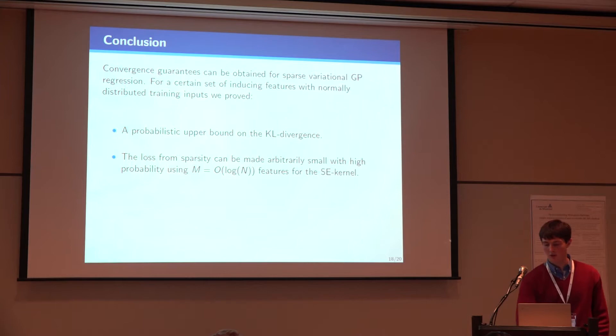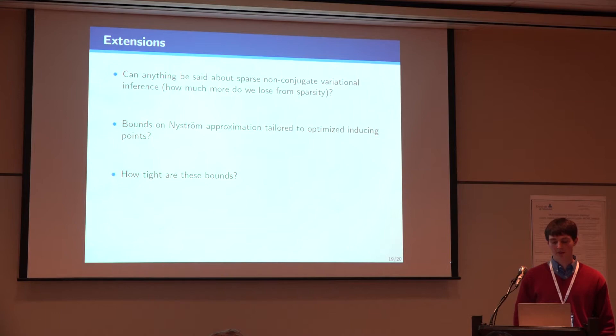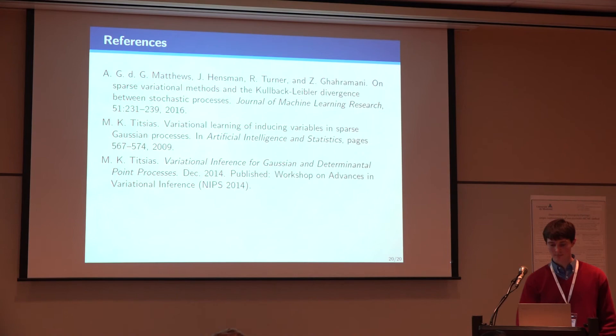In conclusion, we were able to show that sparse variational inference converges, even when we use many fewer inducing features than the amount of data. And we can get a precise probabilistic bound, and also this nice asymptotic scaling. So, a few things we're looking at is whether anything can be said about non-conjugate variational inference, and whether any of the methods we use can instead be used to say something about standard inducing points. And also, it would be nice to have some understanding of how tight these bounds are, and whether log n is really the right number of features. Thank you.